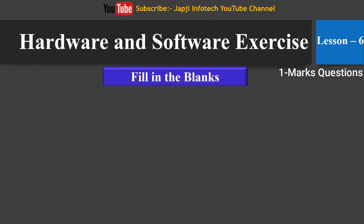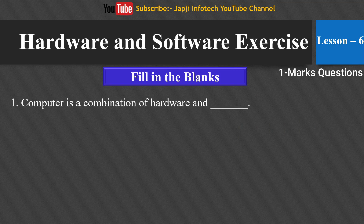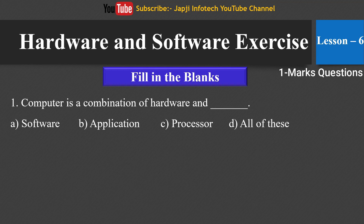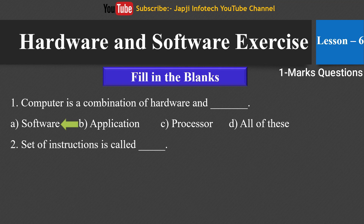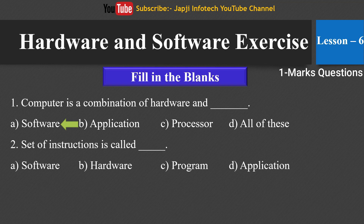We will now learn about fill in the blanks in Lesson 6. The first fill in the blank is: a computer is a combination of hardware and ___. The options are software, application, processor or all of these. The right answer is: a computer is a combination of hardware and software. The second fill in the blank is: a set of instructions is called ___. The options are software, hardware, program or application. The right answer is: a set of instructions is called a program.